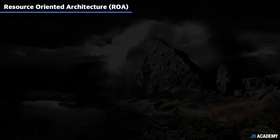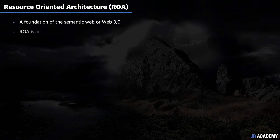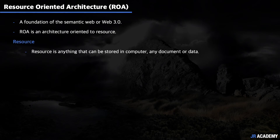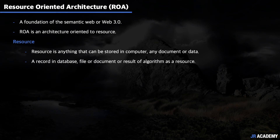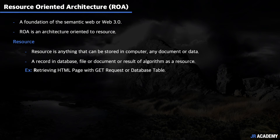The third architectural style is resource-oriented architecture, or ROA. ROA is the foundation of the semantic web, or Web 3.0, which we discussed in our first tutorial. Resource-oriented architecture is oriented around the resource. In simple terms, a resource is anything that can be stored in a computer — a record in a database, a file, a document, or a result of an algorithm. For example, retrieving an HTML page with a GET request or retrieving a database table.